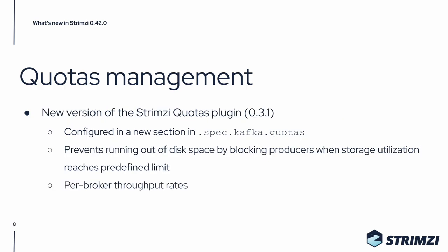We also improved the support for the Strimzi quotas plugin. This includes a new version of the plugin, 0.3.1. This plugin can now also be configured directly in the Kafka custom resource, and it helps you to prevent running out of disk space by blocking producers when storage utilization reaches a predefined limit. It also allows you to set per-broker throughput rates. If you use the older version of the Strimzi quotas plugin, please be careful about the API changes related to the new version.